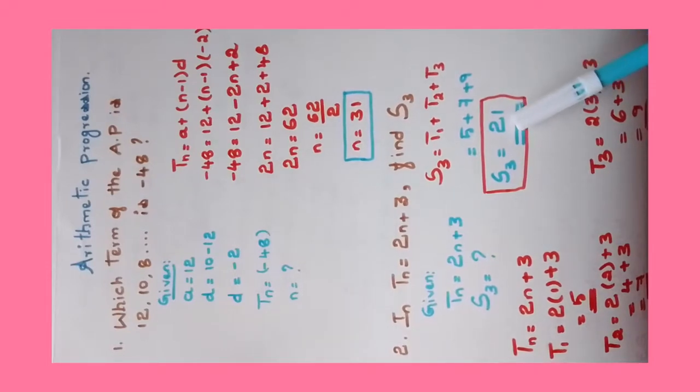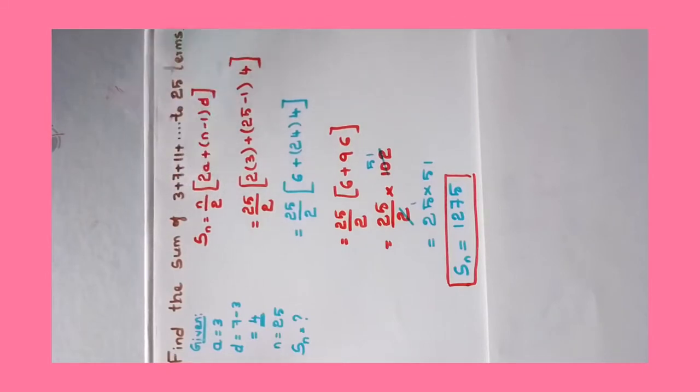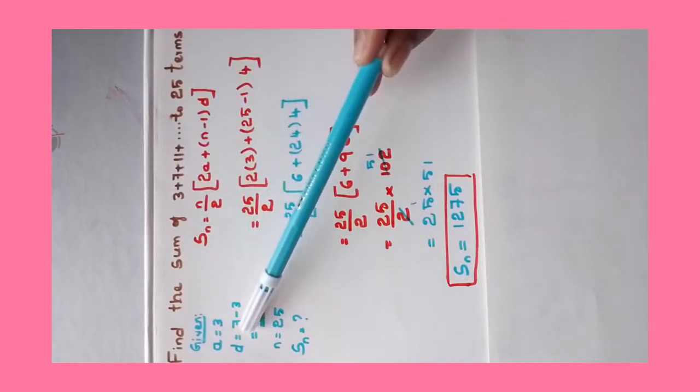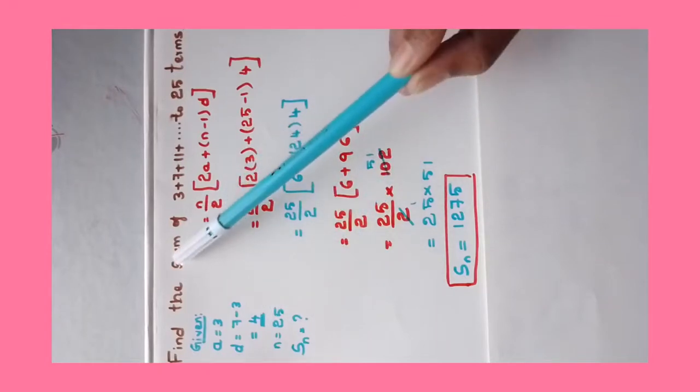Let's learn one more sum. Find the sum of 3 + 7 + 11 up to 25 terms. What is given in the sum? When you list out what's given, half of the sum will be over already. a = 3 (first term), d = 7 - 3 = 4 (common difference), and number of terms n = 25. We have to find the total Sn value.